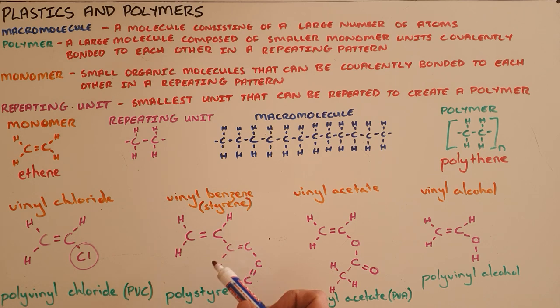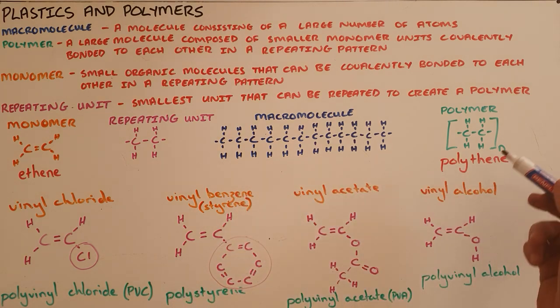Another example of a monomer is vinyl benzene, where here we have a benzene ring attached to that carbon. And when this is arranged into a polymer or a macromolecule, it becomes polystyrene.